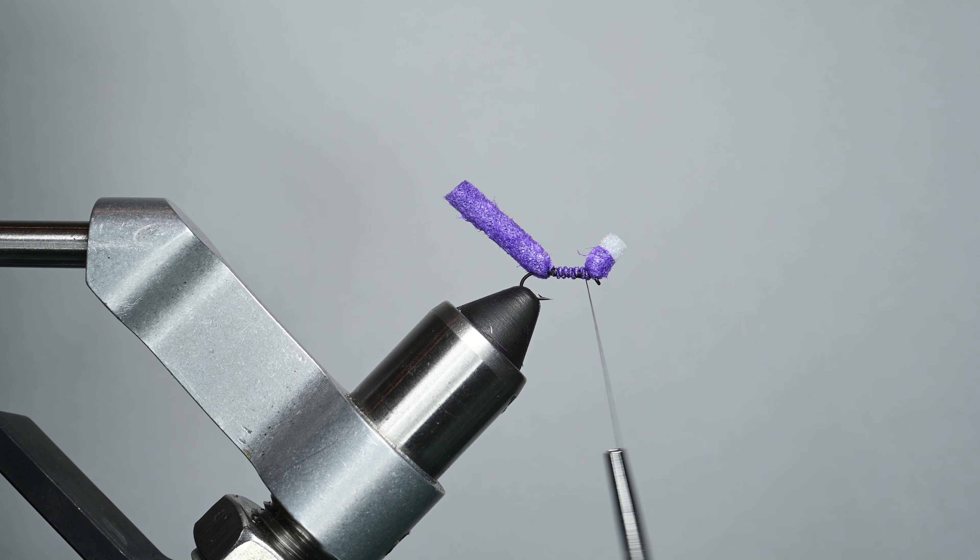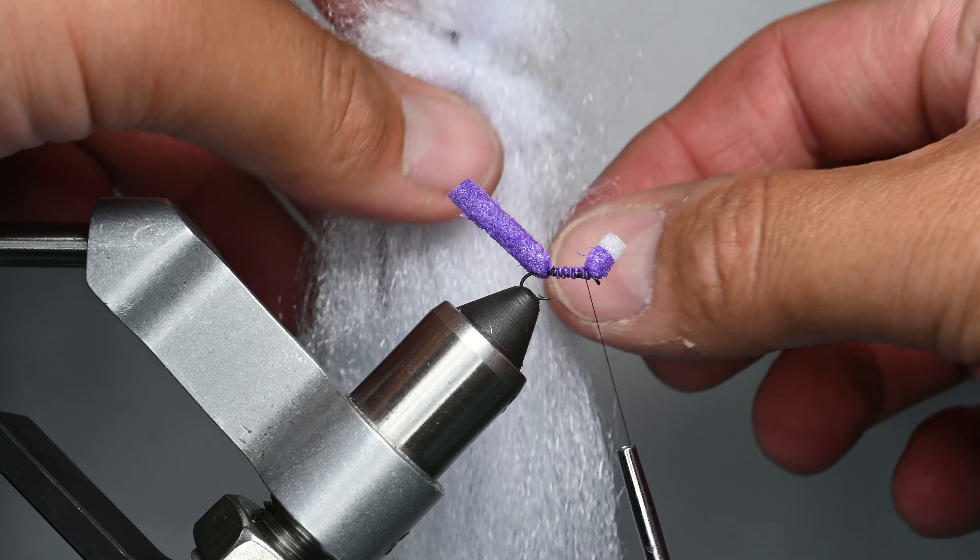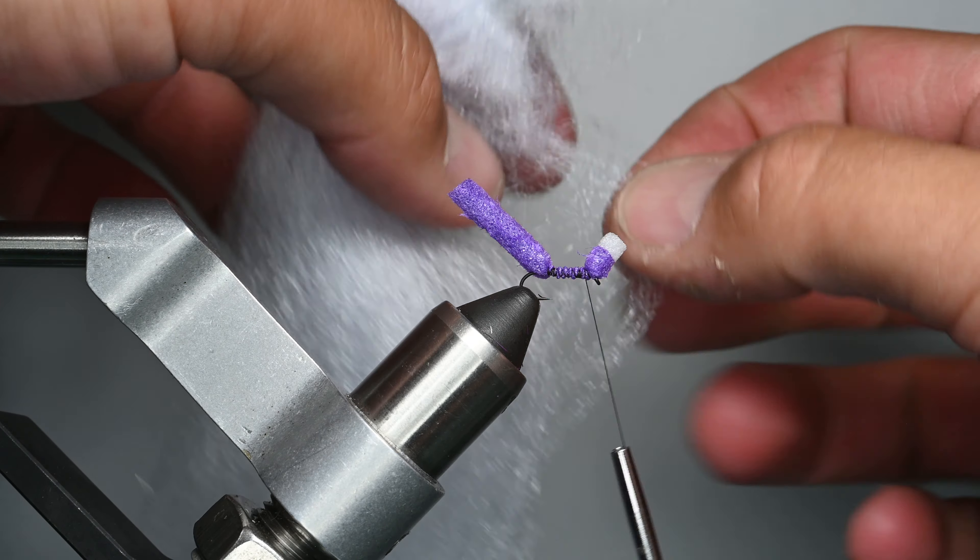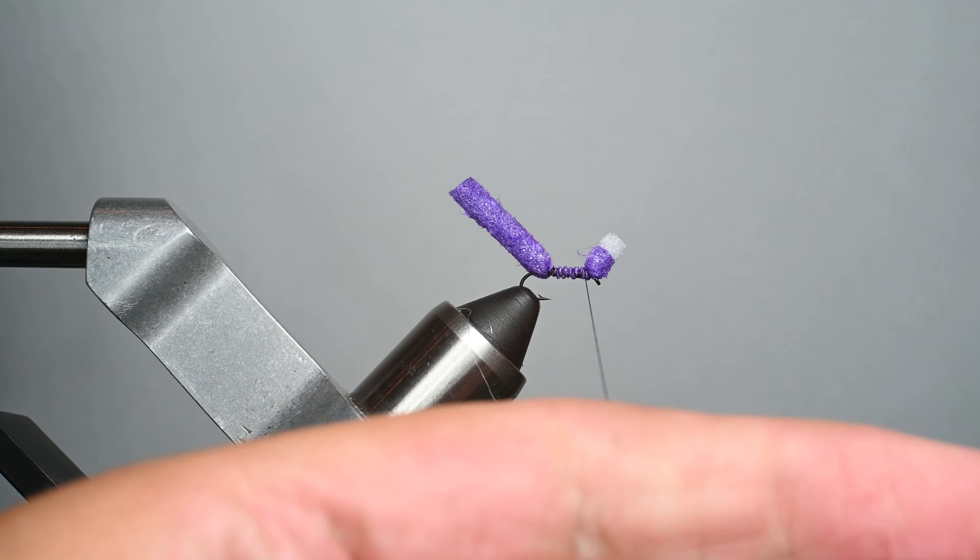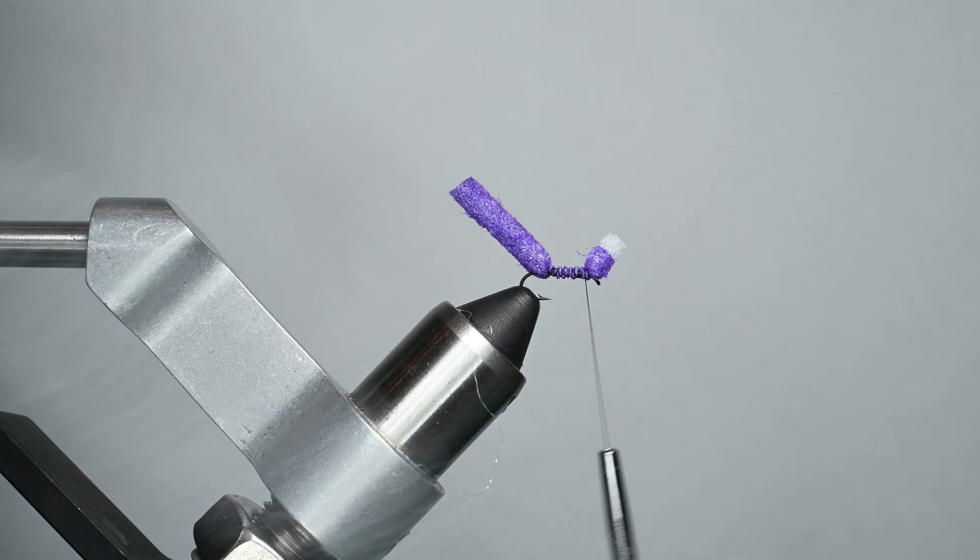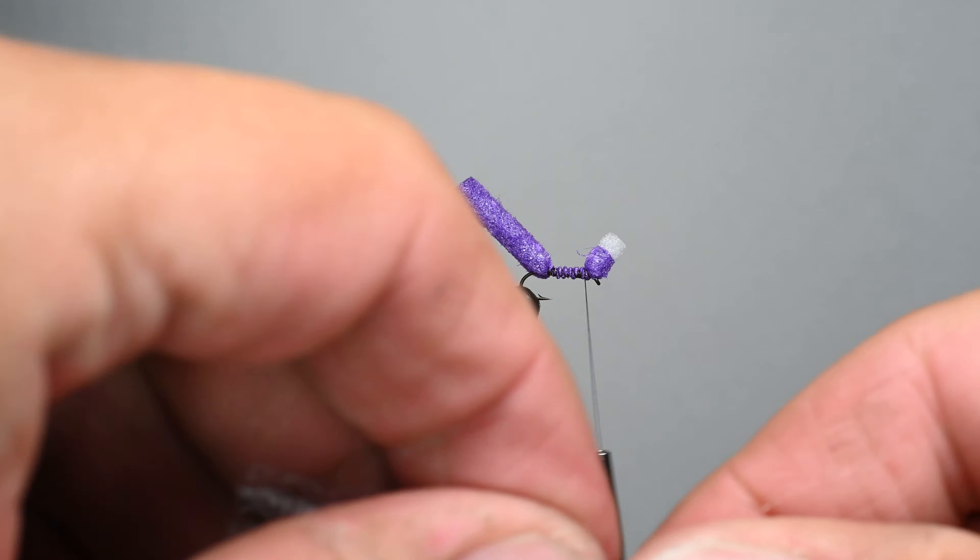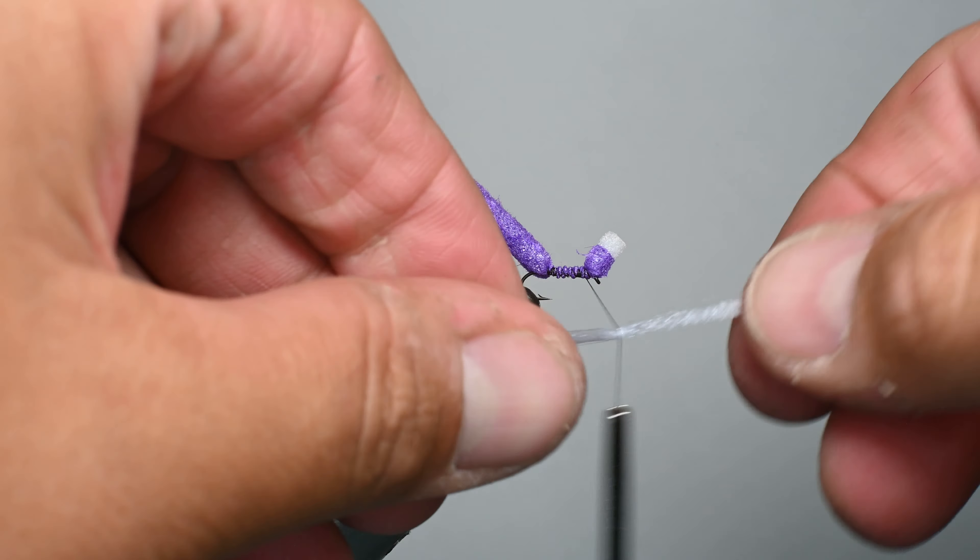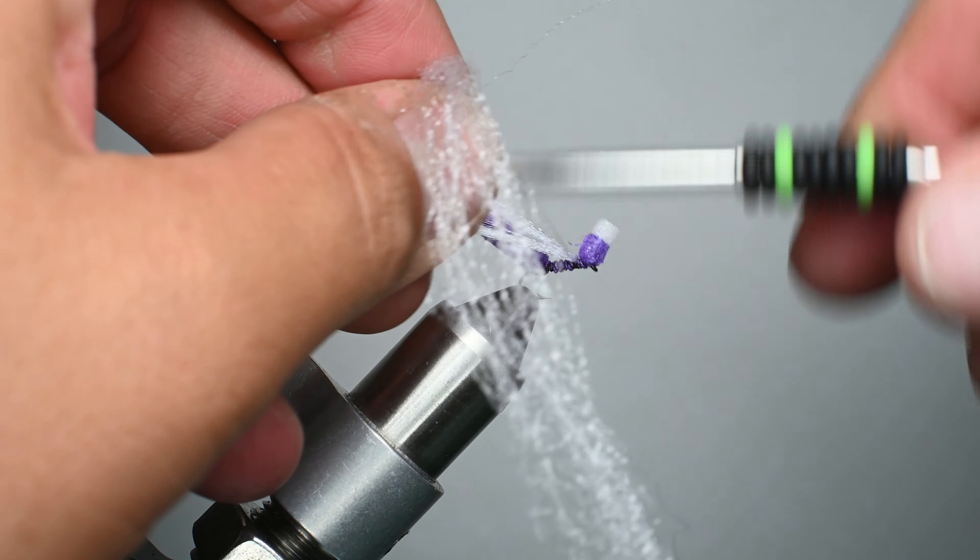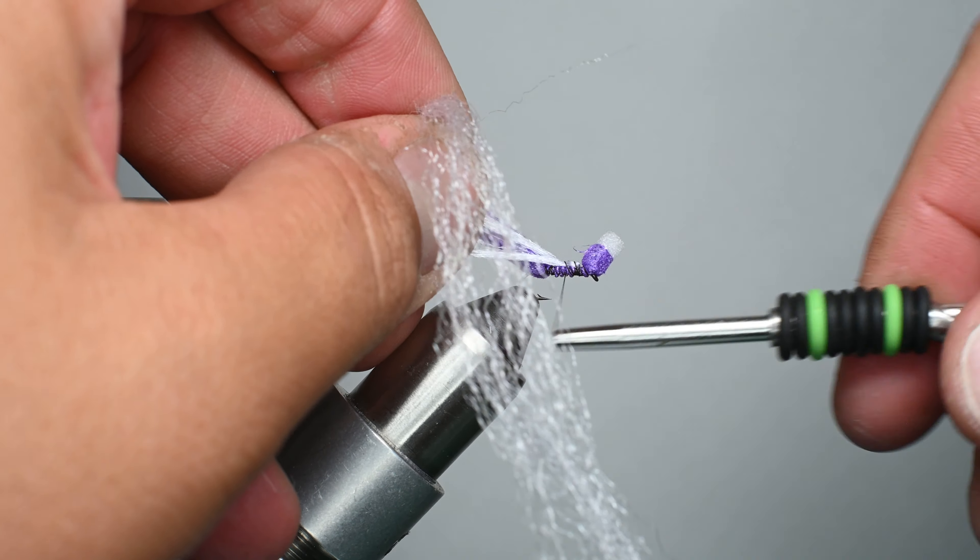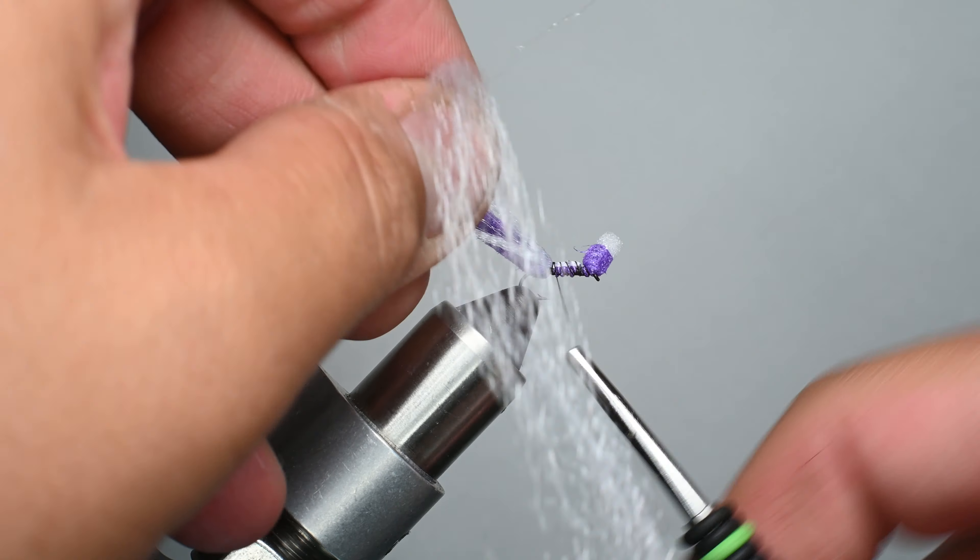Now I'm using some EP trigger point fibers. I believe this is white. I'm just going to grab a little clump of them. I'm going to tie these in basically how I do a lot of my rubber legs. I'm going to fold it around the thread, bring it right here up on top, and then as I work backwards you can see I kind of form them into a V, keeping those separate.